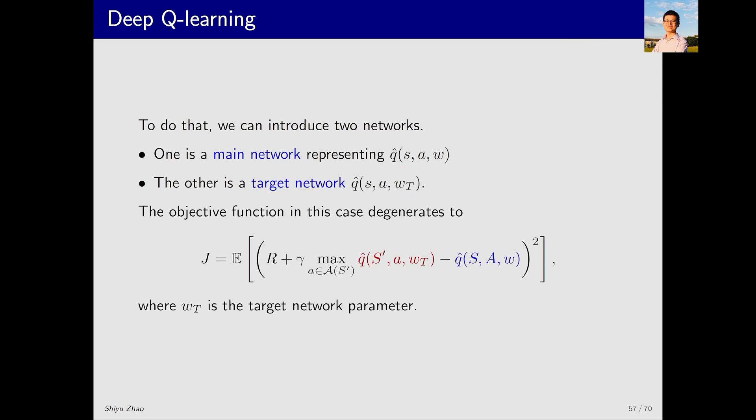If I have two networks and I differentiate the Q values of them, I obtain an objective function like this. When I want to optimize it, how do I do it? I start by assuming that W_T is fixed, and then I calculate the gradient with respect to W. After that, I optimize J.